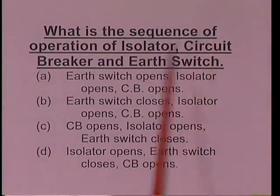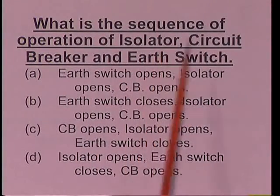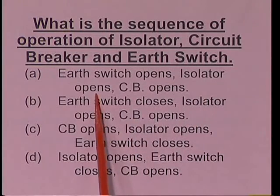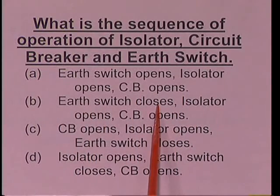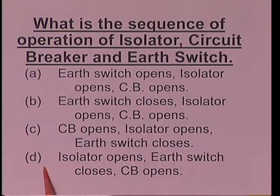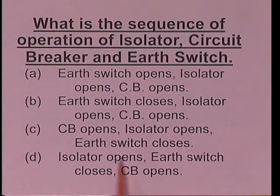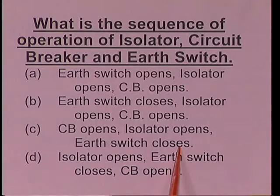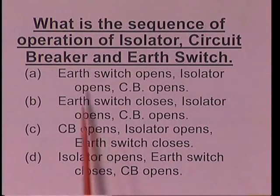What is the sequence of operation of isolator, circuit breaker, and earth switch? The correct answer is C: first circuit breaker opens, then isolator opens, then earth switch closes. The circuit breaker must be opened first because it is connected to the load, then the isolator is opened, and when the isolator opens the earth switch closes so that trapped voltages discharge to the ground.